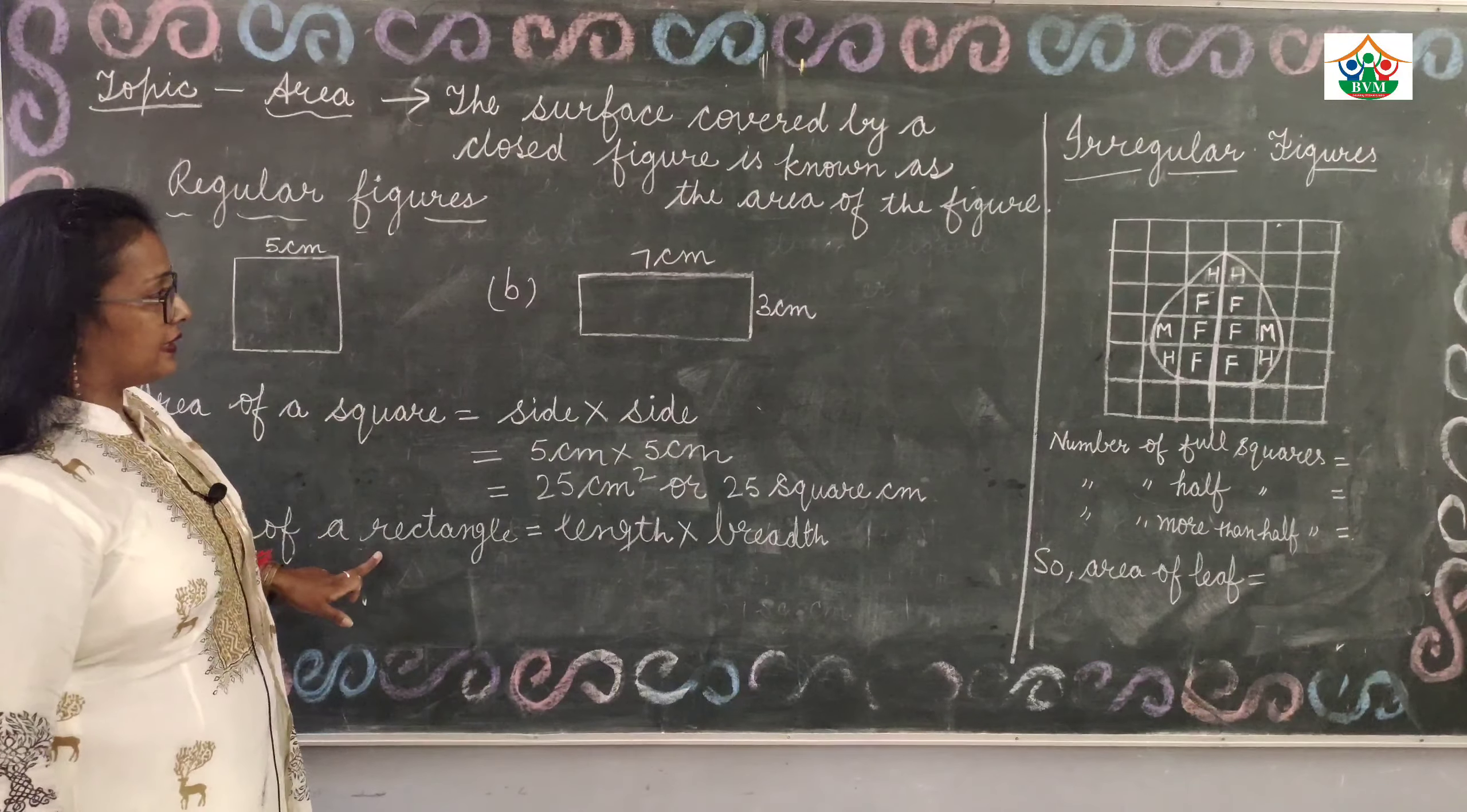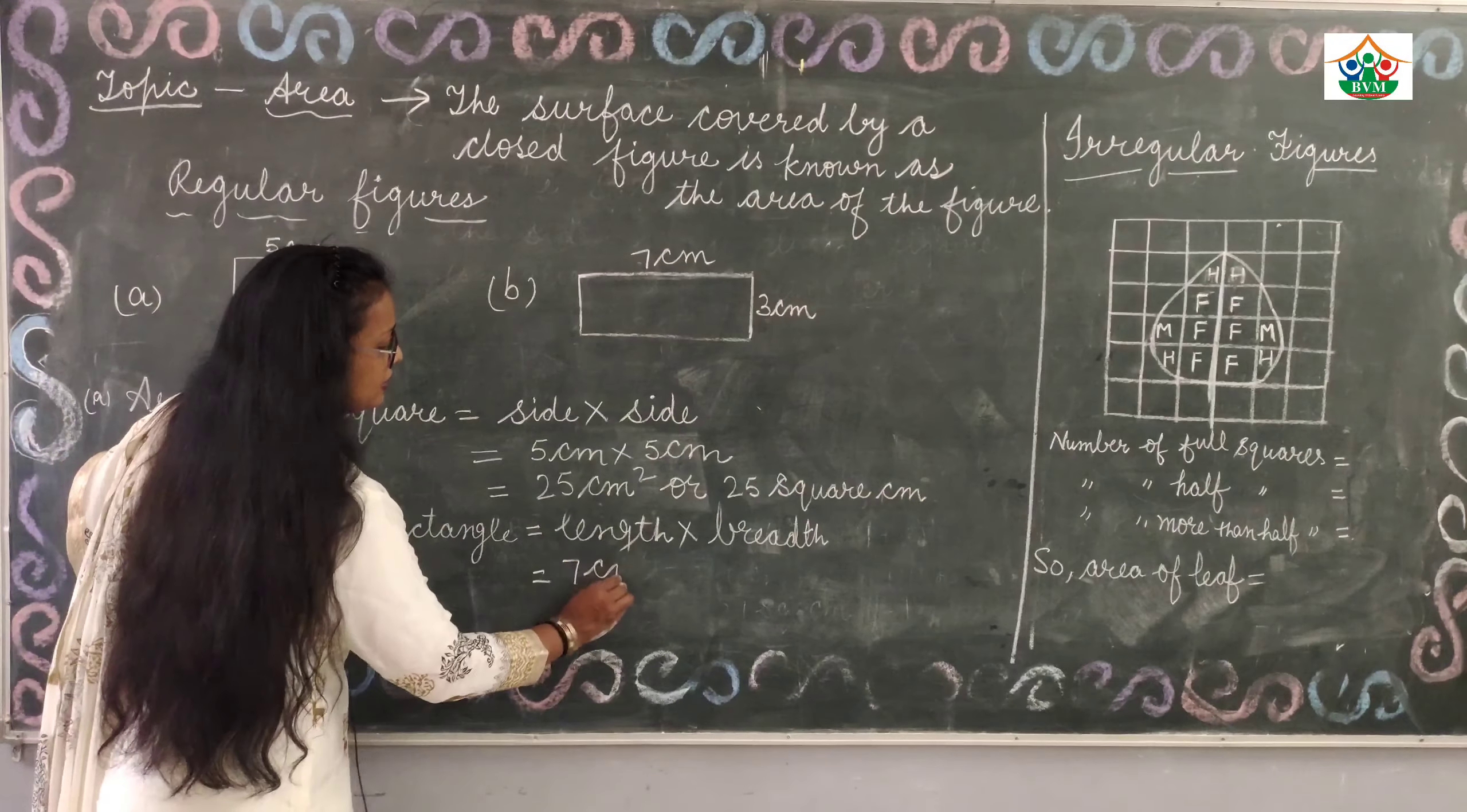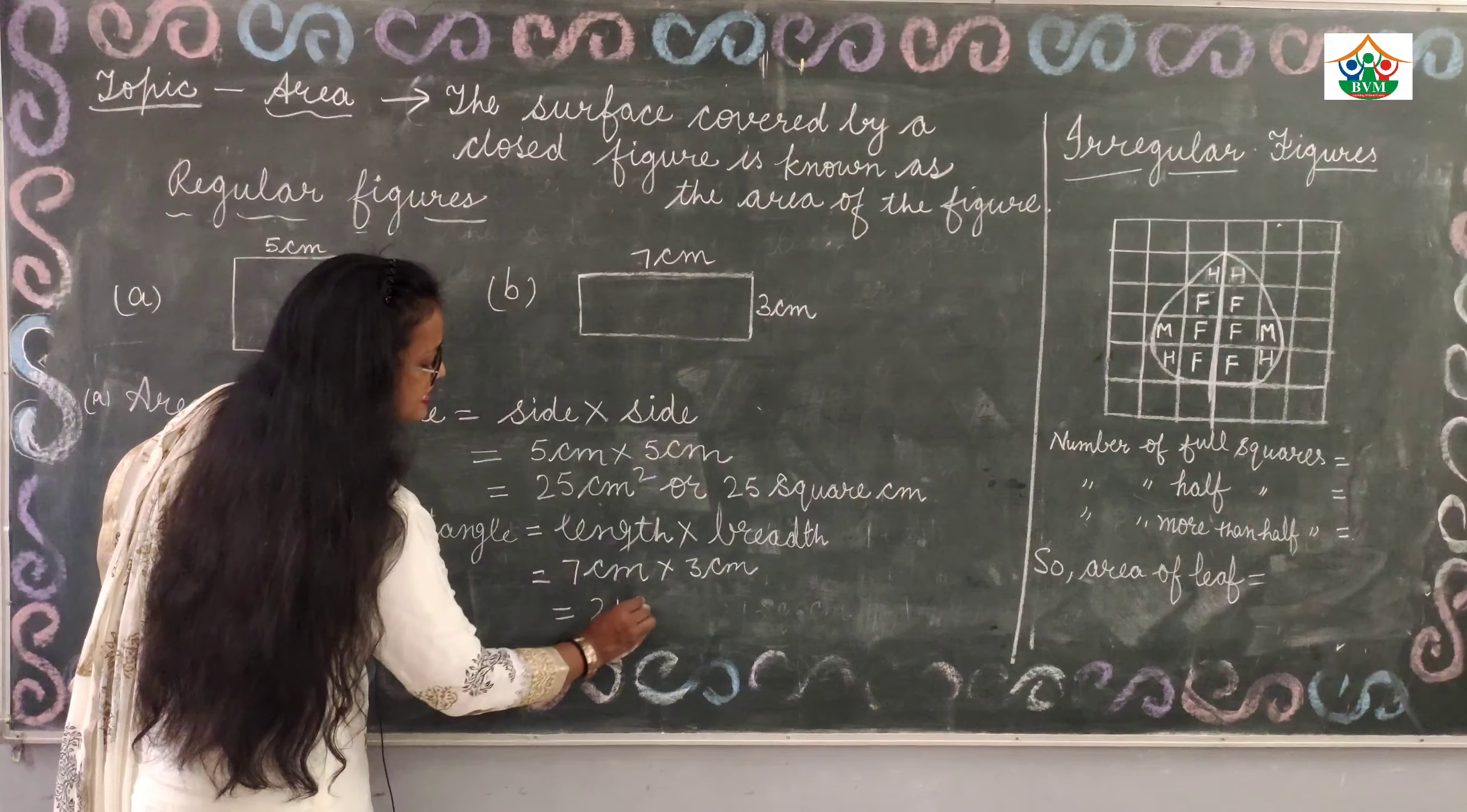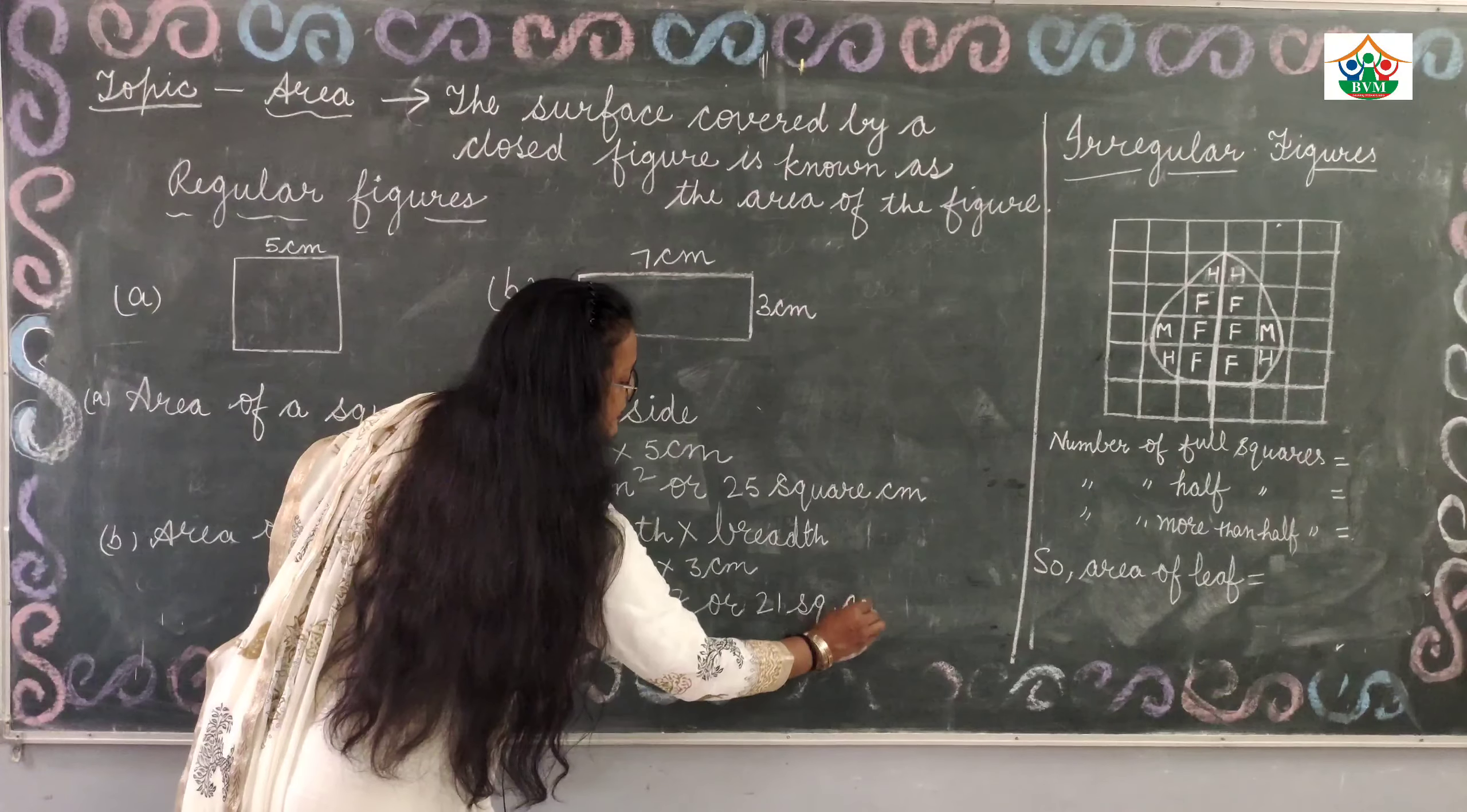Area of a rectangle: length multiply breadth. Length is 7 centimeter and breadth is 3 centimeter. It is equal to 21 centimeter square, or we can write it 21 square centimeter.